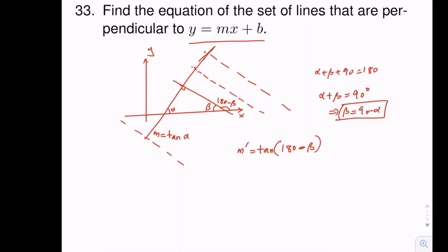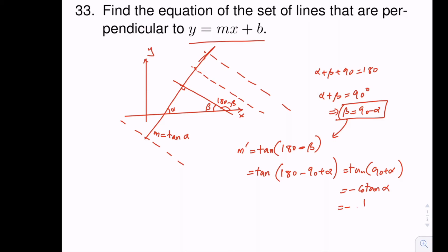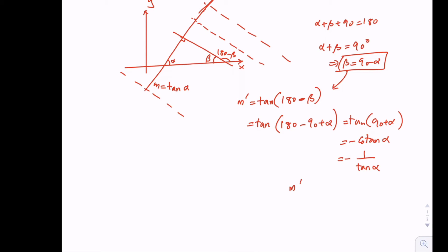So if we substitute beta into our equation, we get tangent of 180 minus (90 minus alpha), which is tangent of 90 plus alpha, and that equals negative cotangent of alpha. Since cotangent is 1 over tangent, cotangent of alpha is 1 over tangent of alpha. From this we can write m prime equals negative 1 over m, giving us the slope of the perpendicular lines.